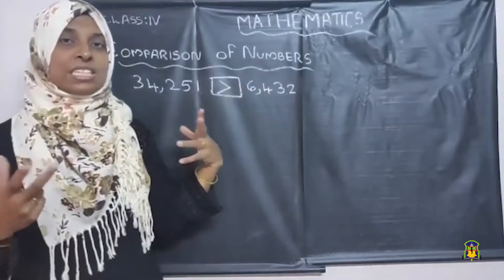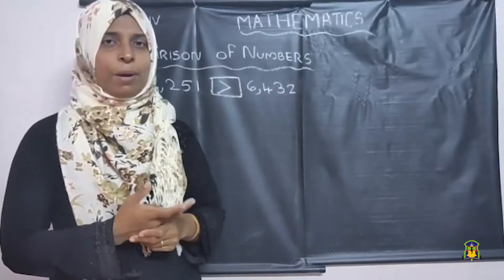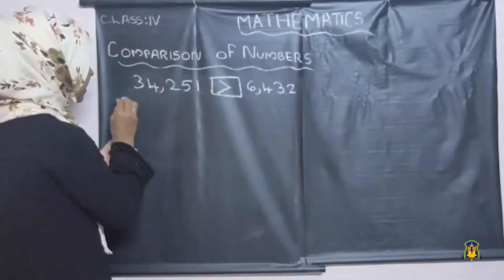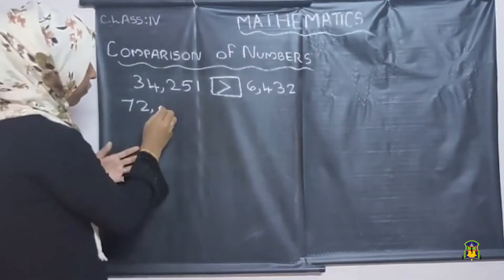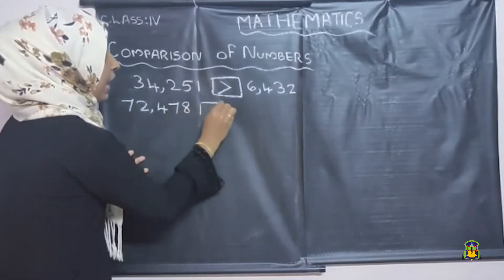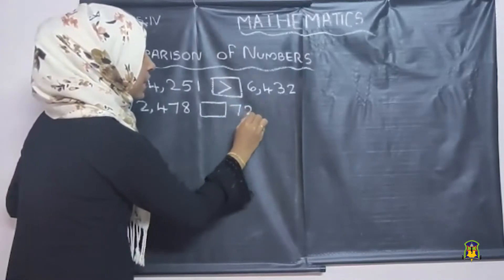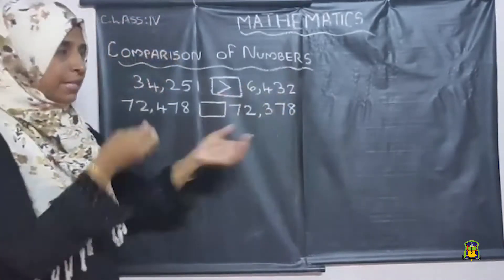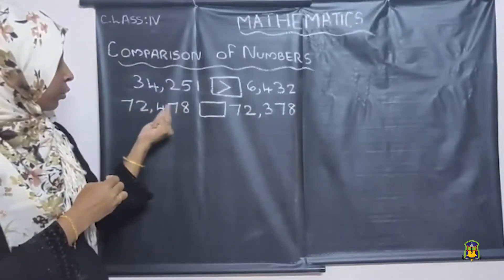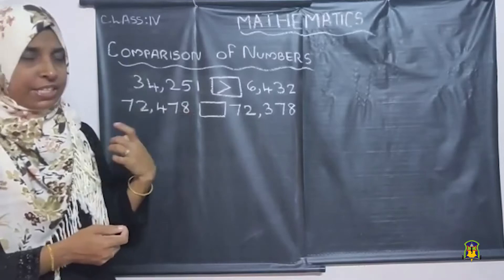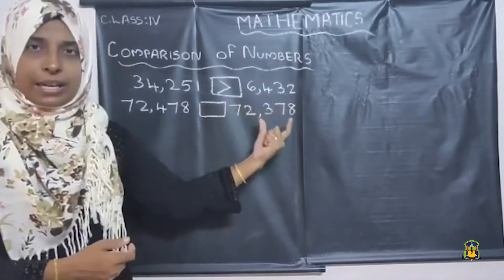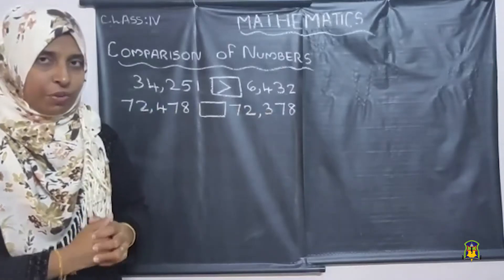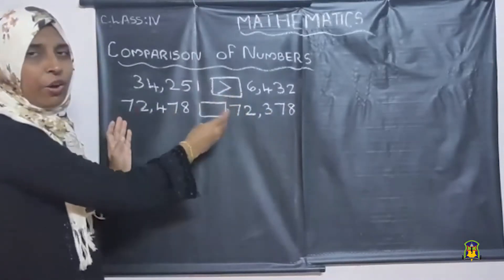This is the case when the number of digits are different. What about if the number of digits are the same in both numbers? Let us look at one example. I am going to write two numbers: 72,478 and 72,378. Both numbers have five digits — the first number is a five-digit number and the second number is also a five-digit number. Both the numbers are five-digit numbers.